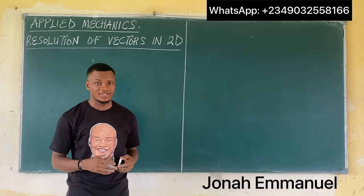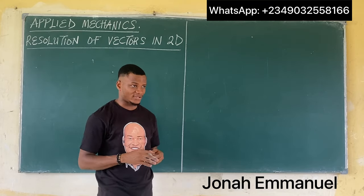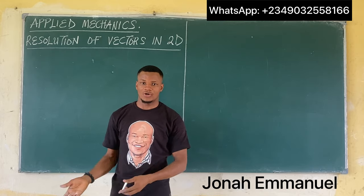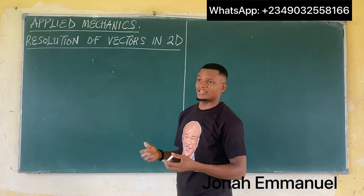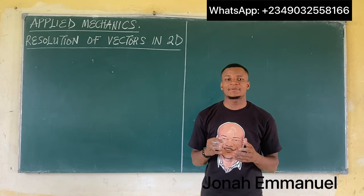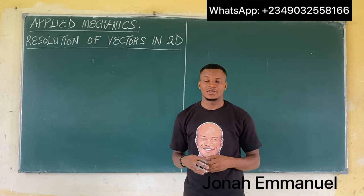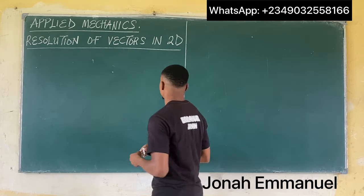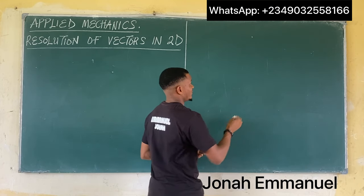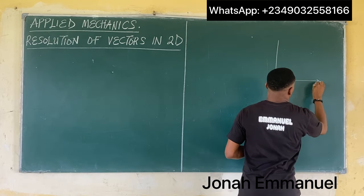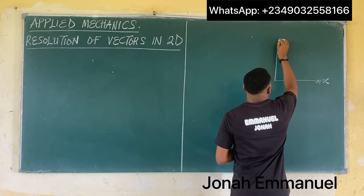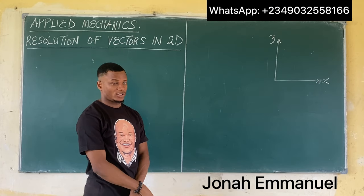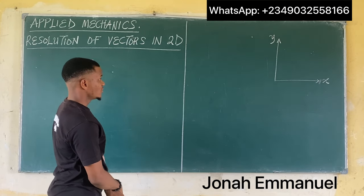So that's how we define resolution of vectors and resultant of vectors. Now, what is 2D? The word 2D means two-dimension. When it comes to resolution of vectors in 2D, we are simply splitting a vector into two dimensions which, in this case, is the X and the Y dimensions — the simple Cartesian coordinates.